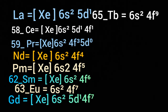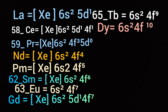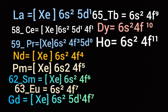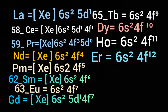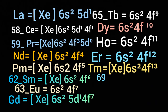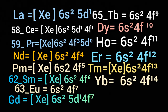In case of terbium, the electron configuration becomes [Xe] 6s2 5D0 4F9. In case of dysprosium, the electron configuration is [Xe] 6s2 4F10. In case of holmium, the electron configuration is [Xe] 6s2 4F11. In case of erbium, the electron configuration becomes [Xe] 6s2 5D0 4F12. In case of thulium, atomic number 69, the electron configuration becomes [Xe] 6s2 5D0 4F13. In case of ytterbium, the electron configuration becomes [Xe] 6s2 5D0 4F14.